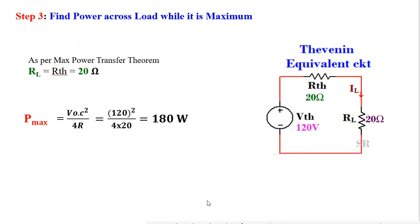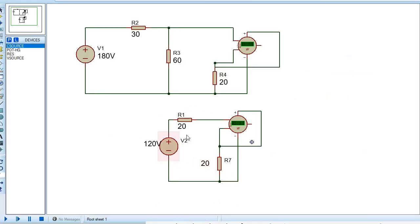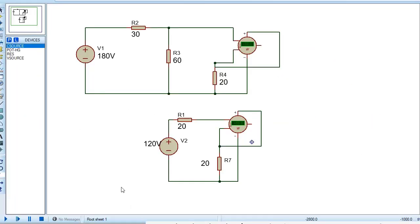Putting those values into the equivalent circuit: VTH is 120 volt, RTH is 20 ohm, and RL is 20 ohm. Using the maximum power formula, I got the maximum power at load is 180 watt. Now checking whether my calculation is perfect: this is the equivalent circuit with the same values I calculated, and this is the main circuit. If the power at load in both circuits equals 180 watt, then my calculations are confirmed to be perfect.